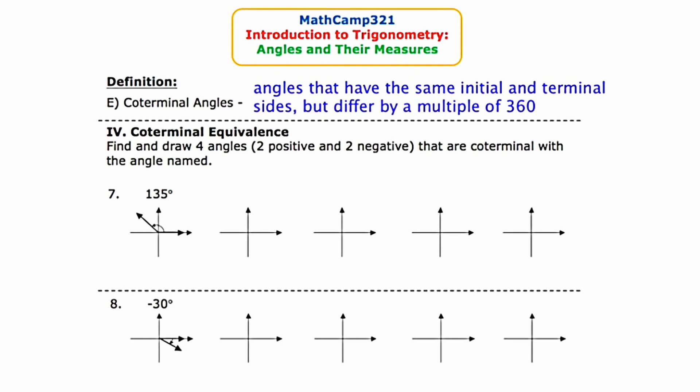In exercise number 4, we're asked to find coterminal equivalents. The directions say, find and draw four angles, two positive and two negative, that are coterminal with the angle named.